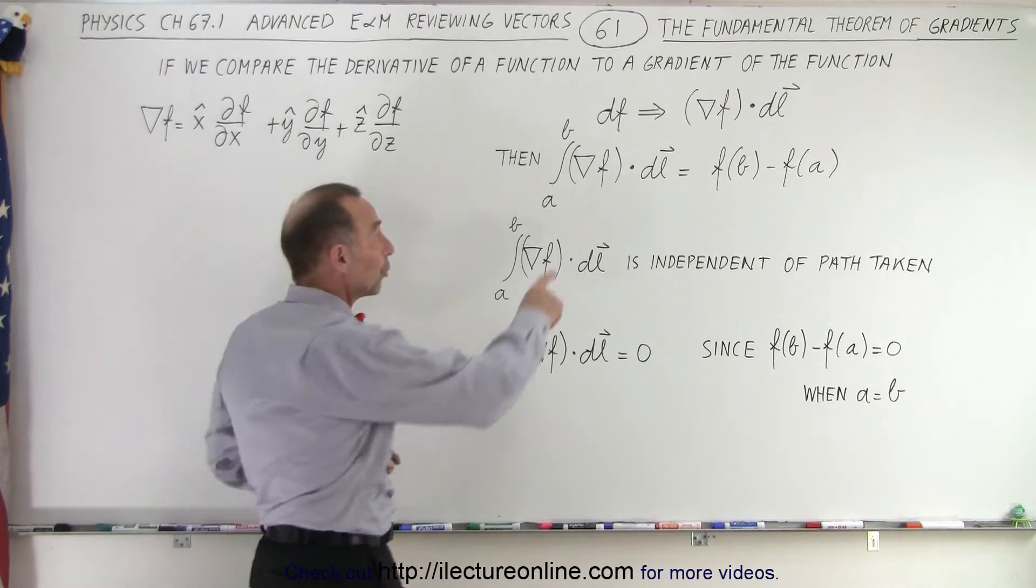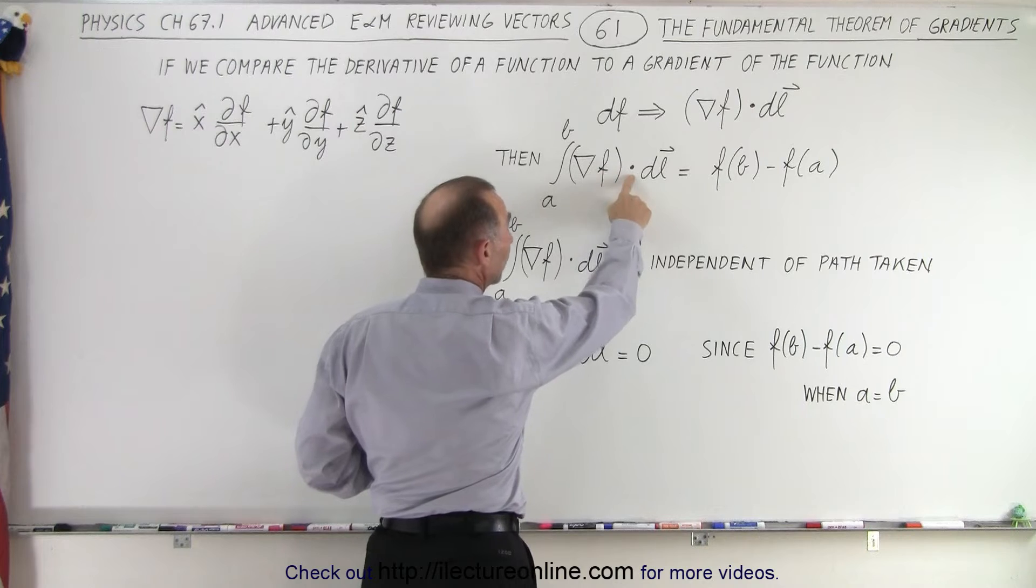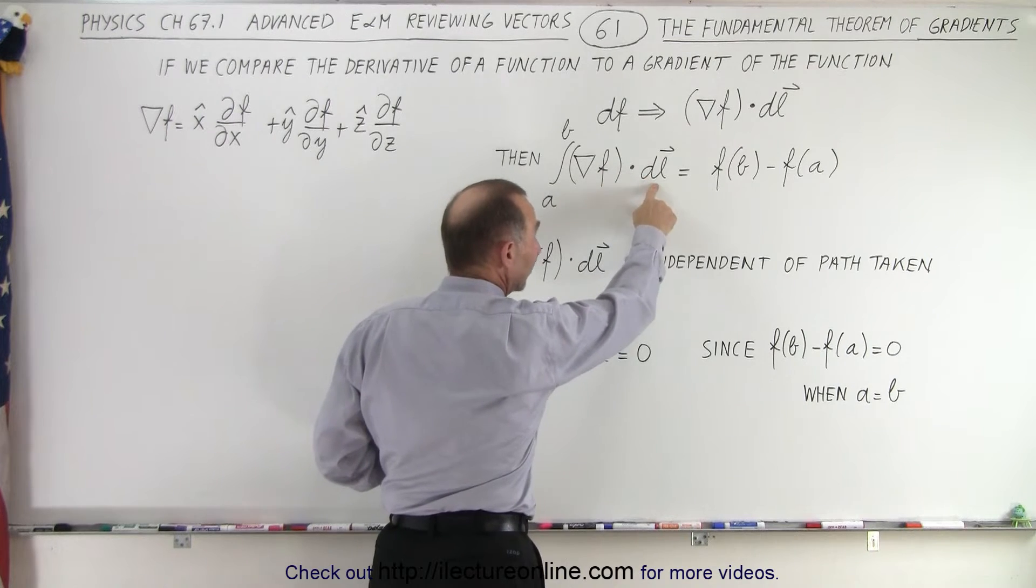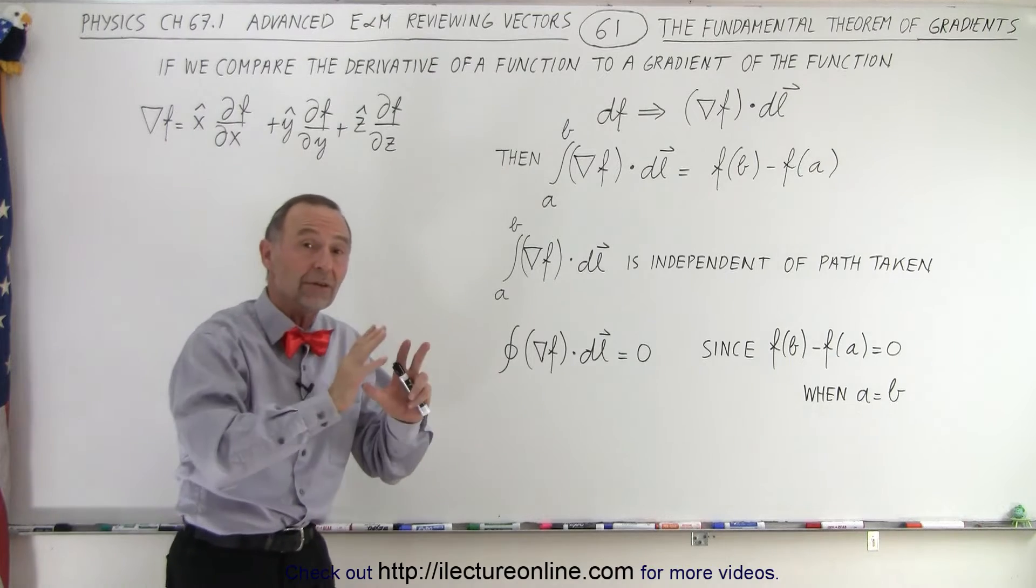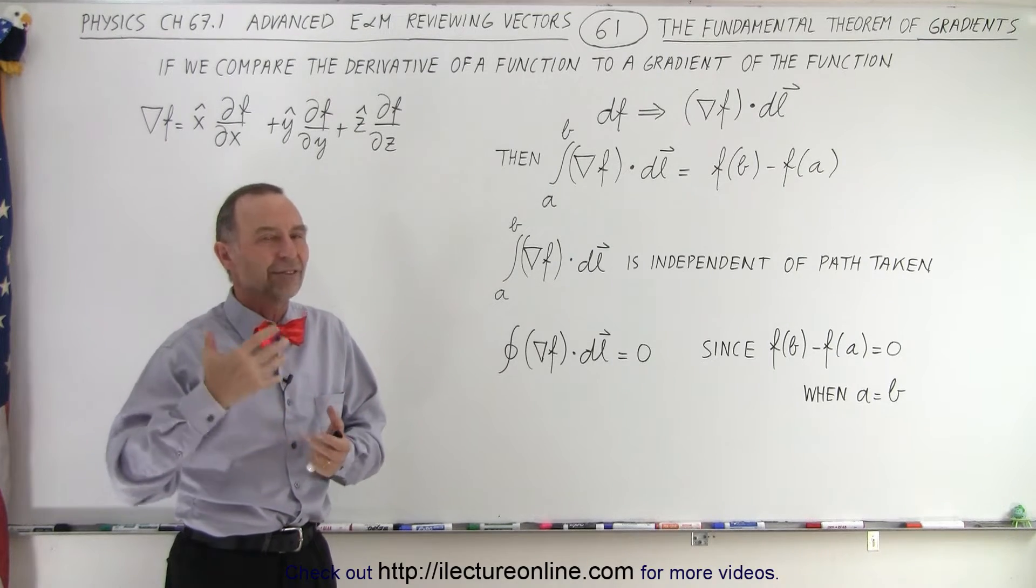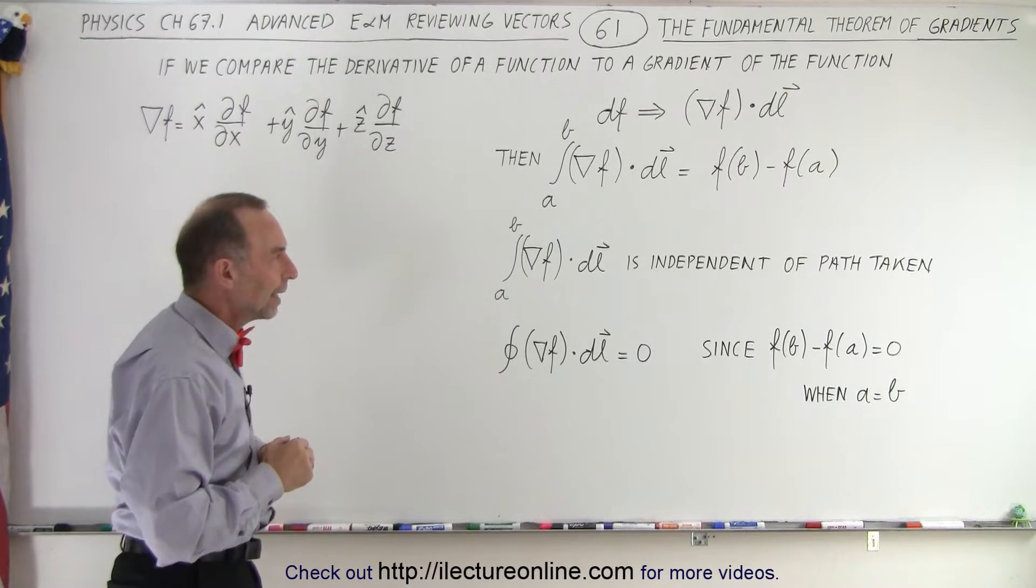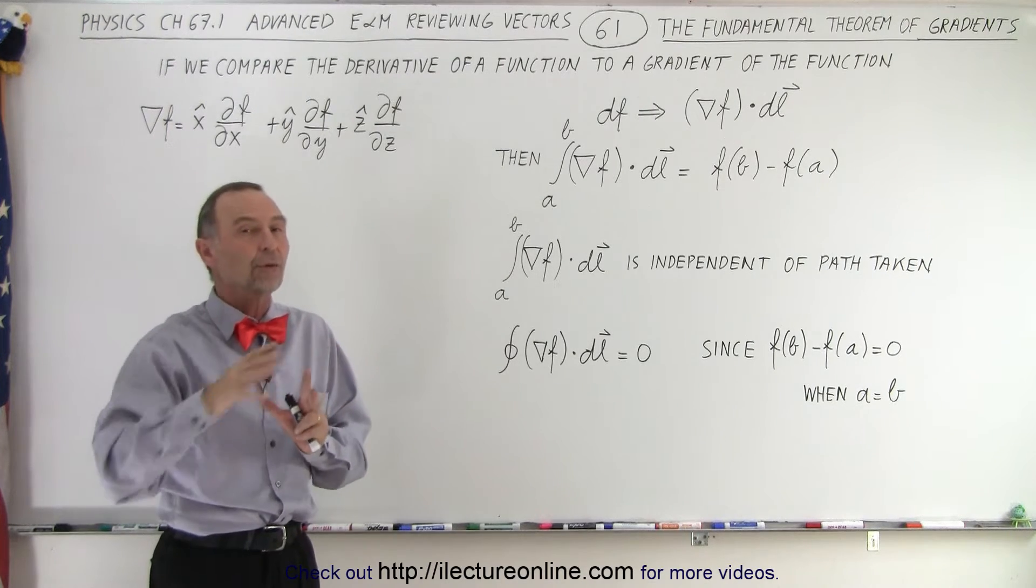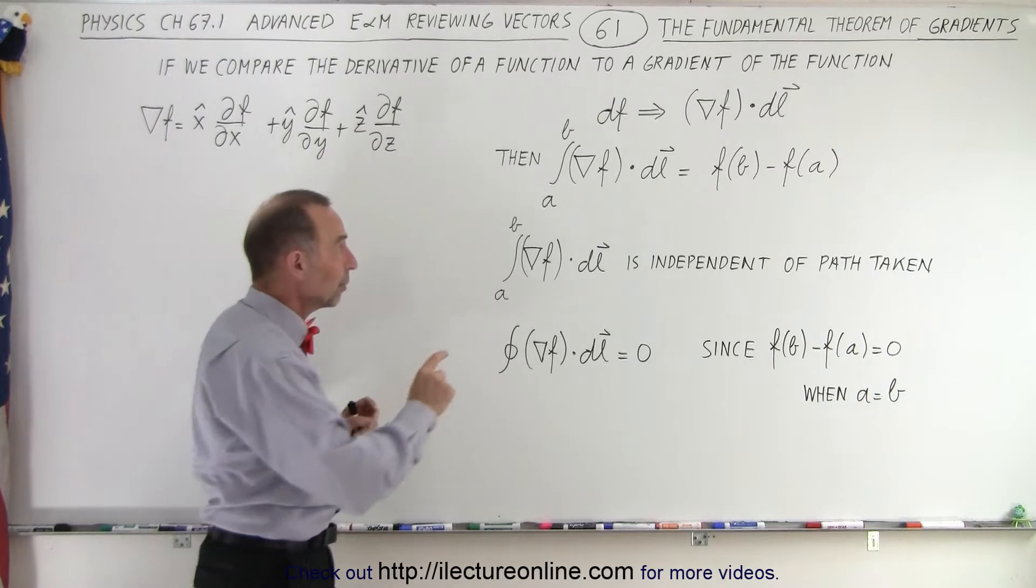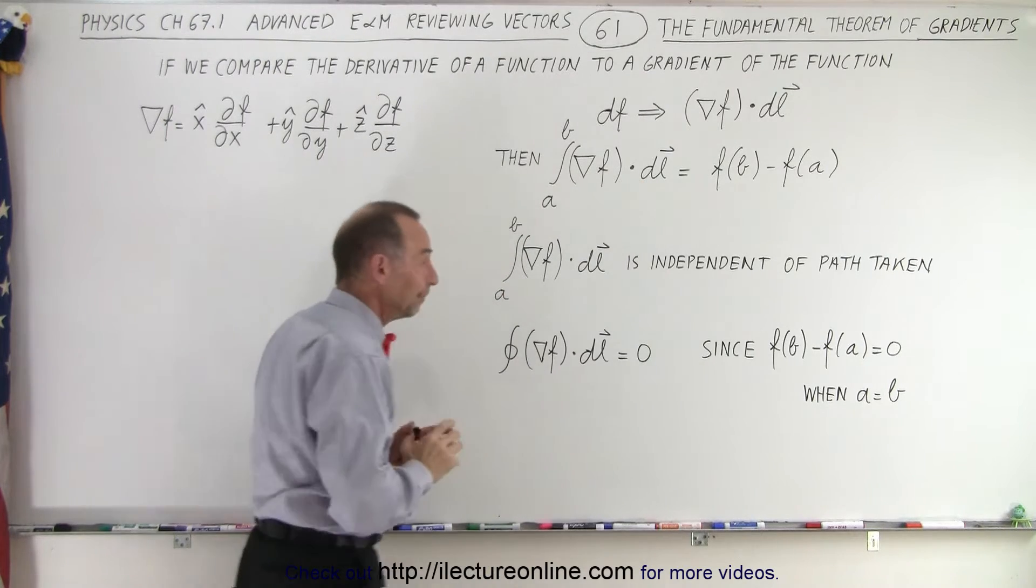But if we take the gradient of a function and then we multiply it via the dot product with a line segment, DL, then the vector component disappears and we simply end up with a scalar function again. And so there's a lot of comparison now between the derivative and the gradient of a function, especially when we then also multiply it via the dot product with DL.